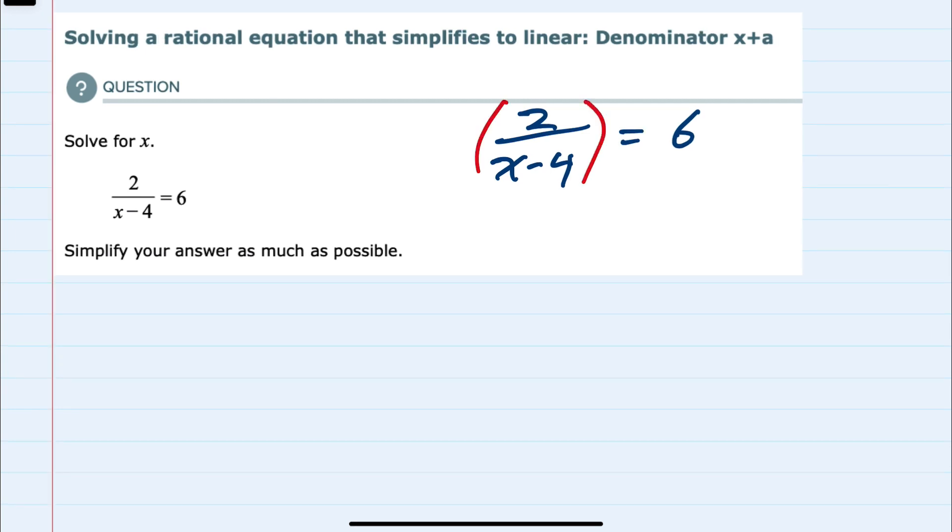my first step is going to be to multiply both sides of this equation by x minus 4. The reason I'm doing that is because that's going to cancel the x minus 4 in the denominator on the left hand side, leaving me now with just 2.